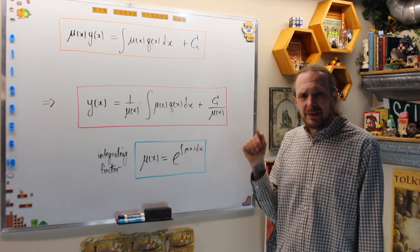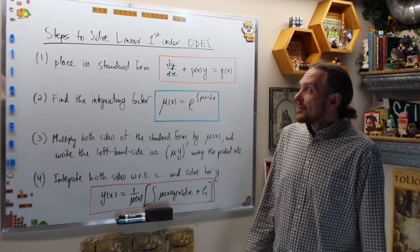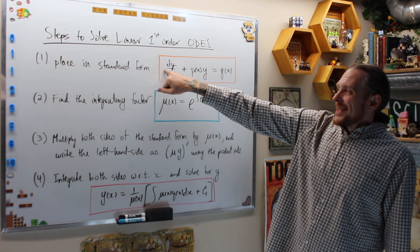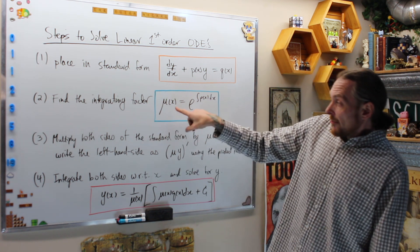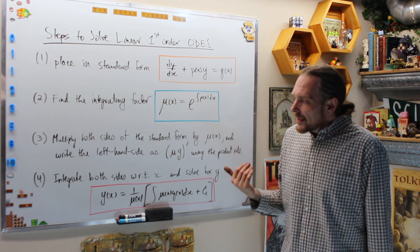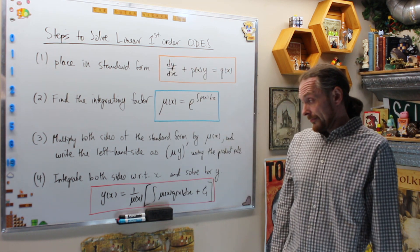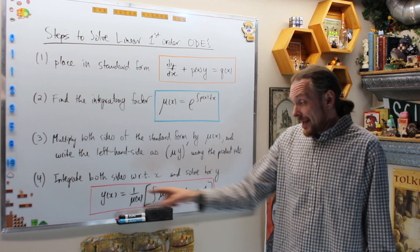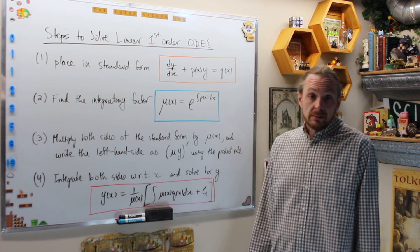Here are the steps for solving linear first-order ordinary differential equations. Step 1: place it in standard form — always get dy/dx by itself; whatever is in front of y is p of x. Step 2: find the integrating factor by computing e to the integral of p of x dx — compute the integral first, then raise it to e. Step 3: multiply both sides of the standard form by the integrating factor and write the left-hand side as the product rule. Step 4: integrate both sides with respect to x, then divide and solve for y to get the explicit general solution.